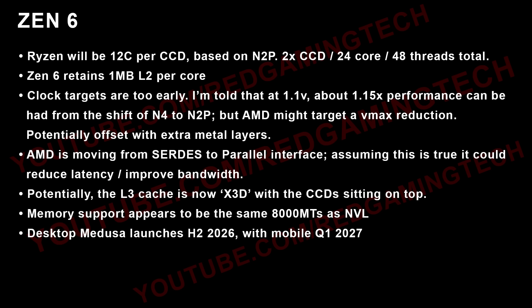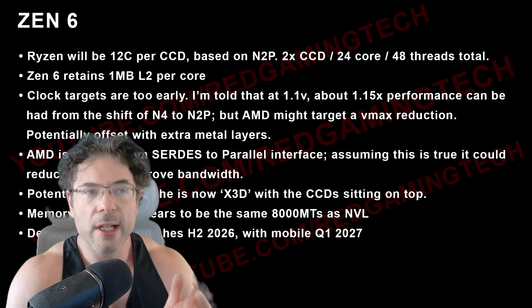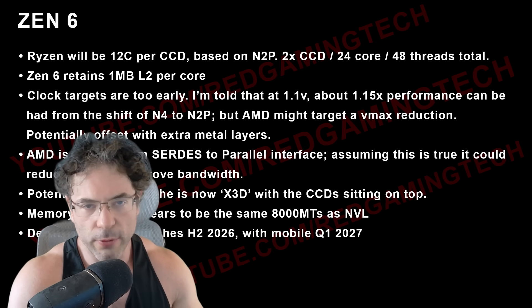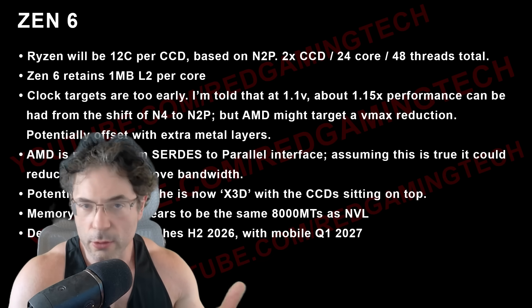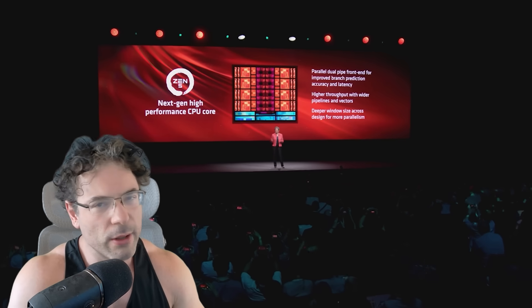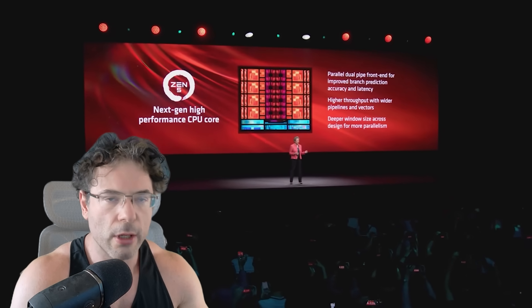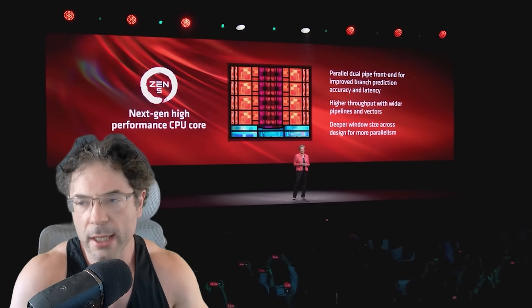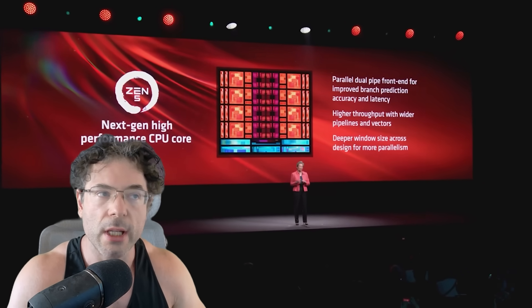One of my sources told me — this is from a couple of months ago, around February — that clock targets are pretty early, at around 1.1 volts. That's around a 1.15x performance gain that can be had from the shift of N4 to N2P, but AMD may target a Vmax reduction, potentially offsetting with extra metal layers. They also add they wouldn't be surprised if Zen 6 will be capable of hitting over 6 gigahertz for lightly multi-threaded workloads. Honestly with this stuff, I'll just wait and see — these chips are not launching this year, so we'll have a much better understanding of where the final clock frequencies lie.